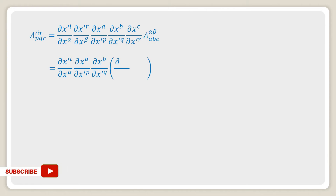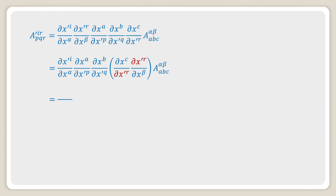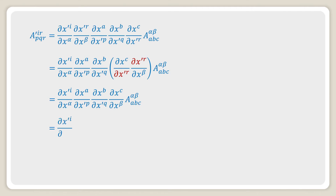we write (∂x'^i / ∂x^α) · (∂x^a / ∂x'^p) · (∂x^b / ∂x'^q) whole into (∂x^c / ∂x'^r) · (∂x'^r / ∂x^β), combining the terms which contain ∂x'^r. After cancelling the ∂x'^r terms, we get (∂x'^i / ∂x^α) · (∂x^a / ∂x'^p) · (∂x^b / ∂x'^q) · (∂x^c / ∂x^β) · a^αβ_abc.